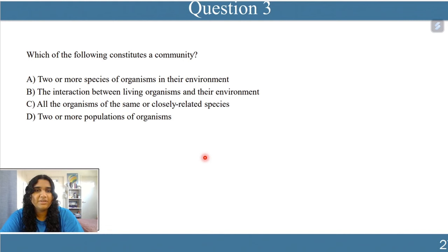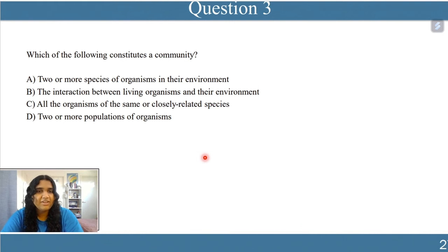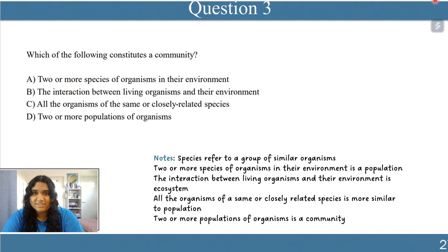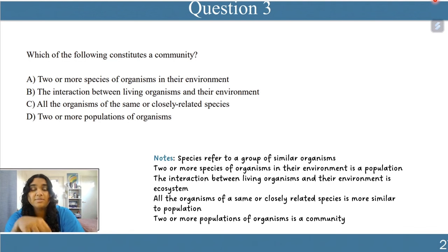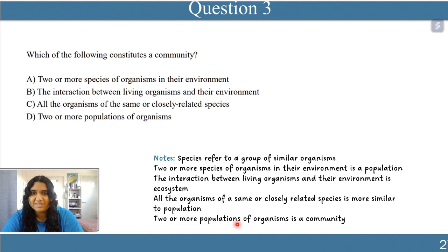Question three: which of the following constitutes a community? A — two or more species in their environment. B — the interaction between living organisms and their environment. C — all organisms of the same or closely related species. D — two or more populations of organisms. A species is a group of similar organisms; two or more species in an environment is a population; interaction between living organisms and environment is an ecosystem; two or more populations of organisms together is a community. The answer is D.